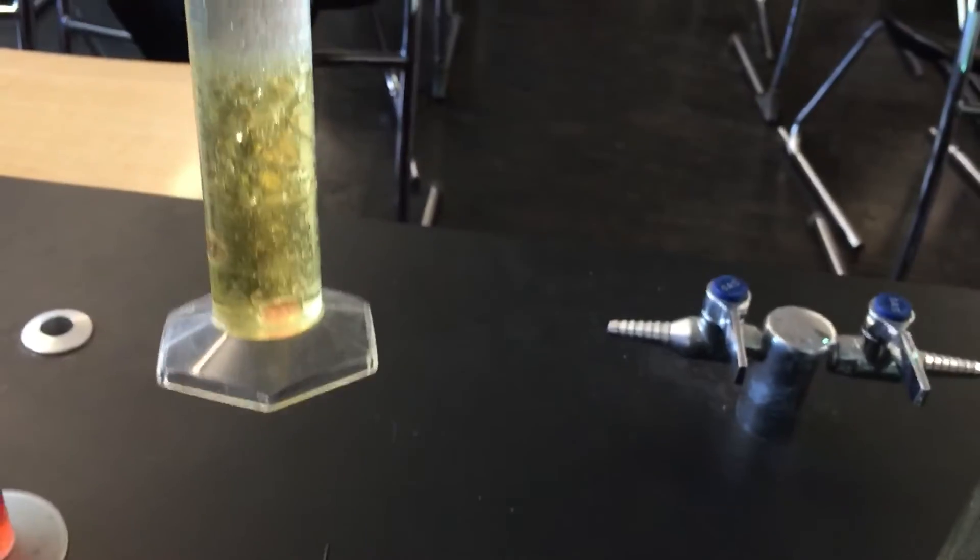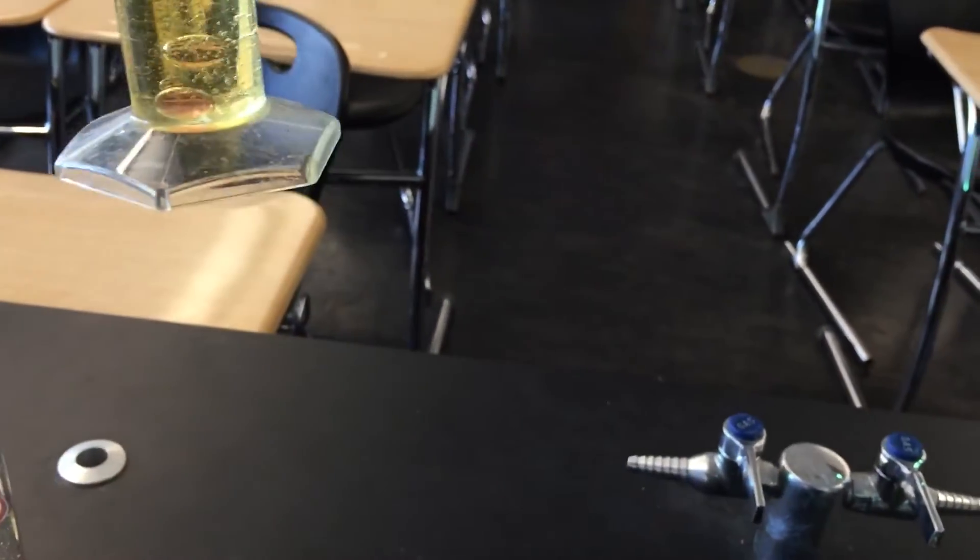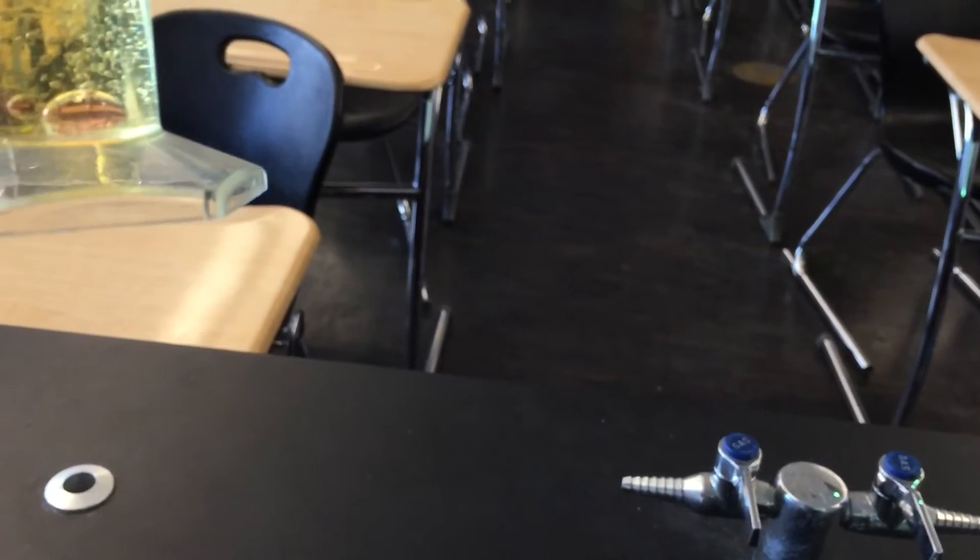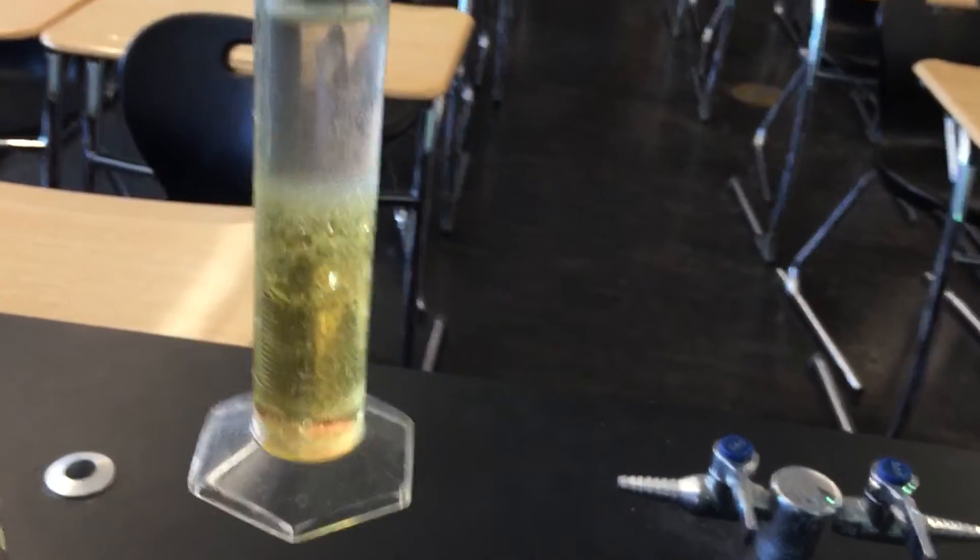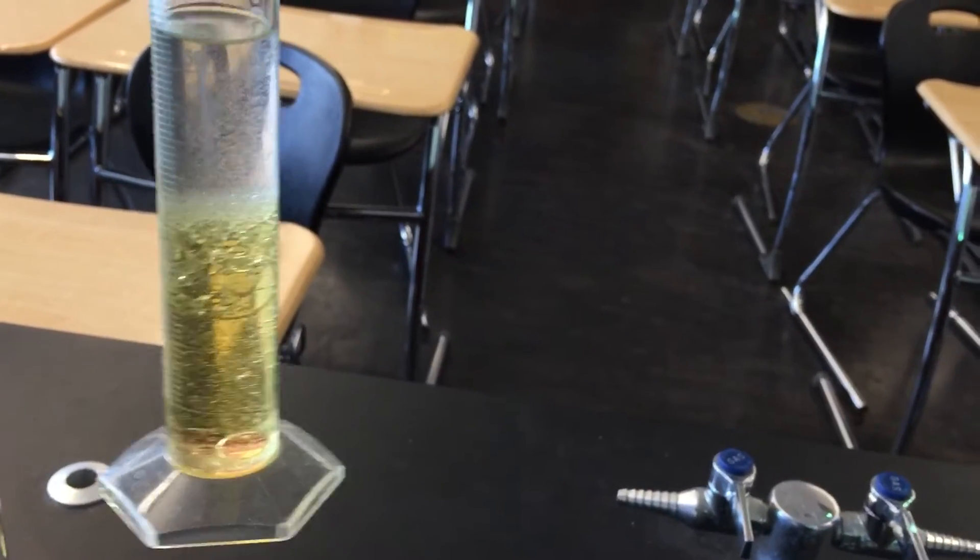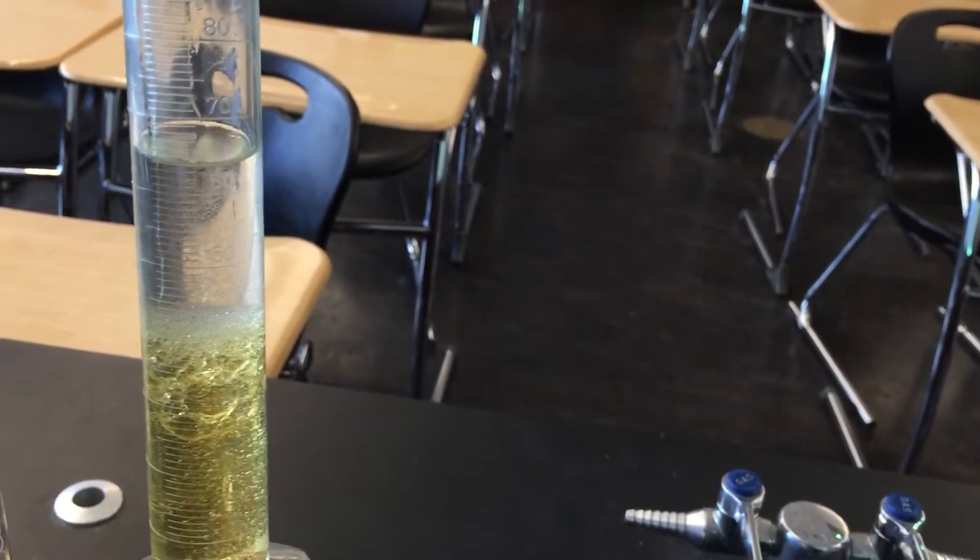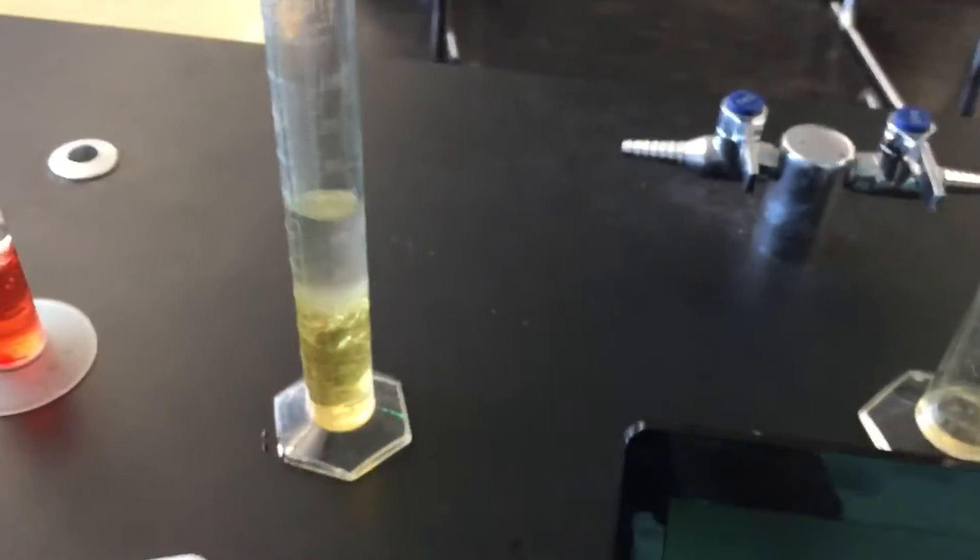Okay. So now I have rubbing alcohol on top and then corn oil underneath. And so how many milliliters is that? Let's see, maybe 40 or so milliliters of corn oil and then about 30 maybe milliliters, maybe a little bit less of rubbing alcohol.